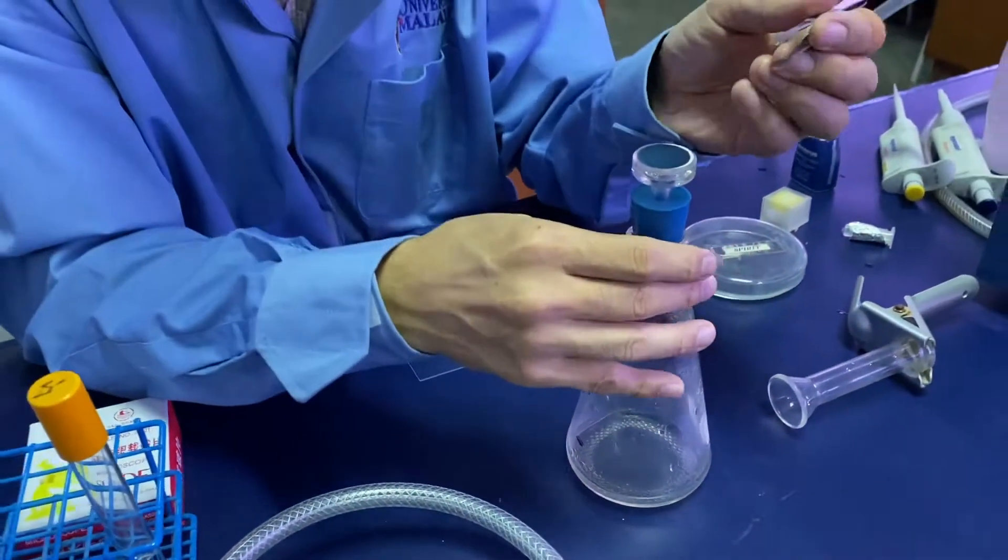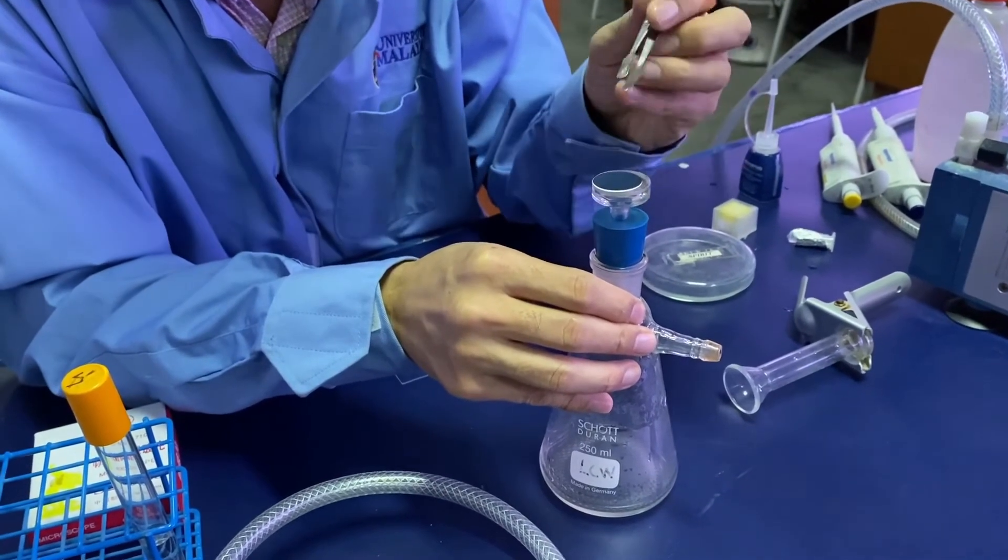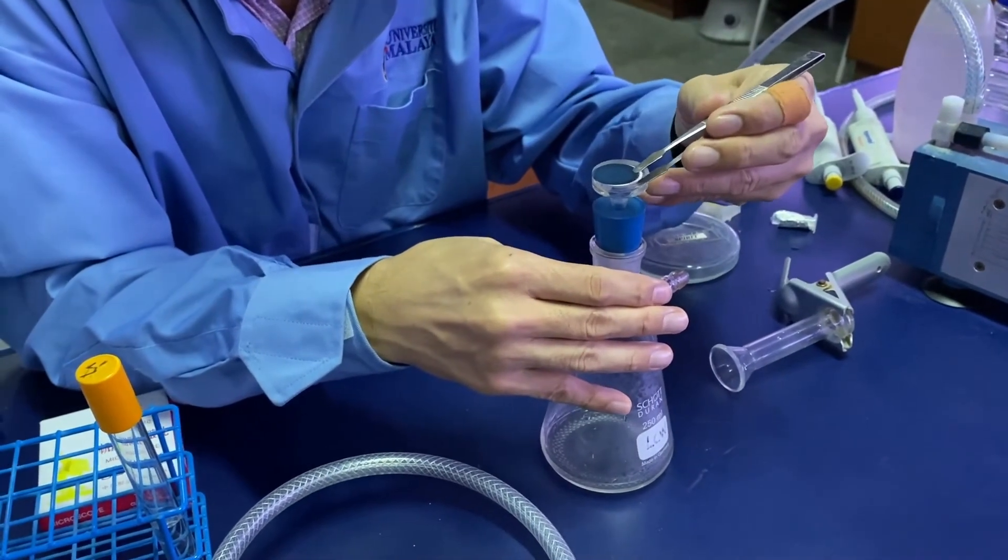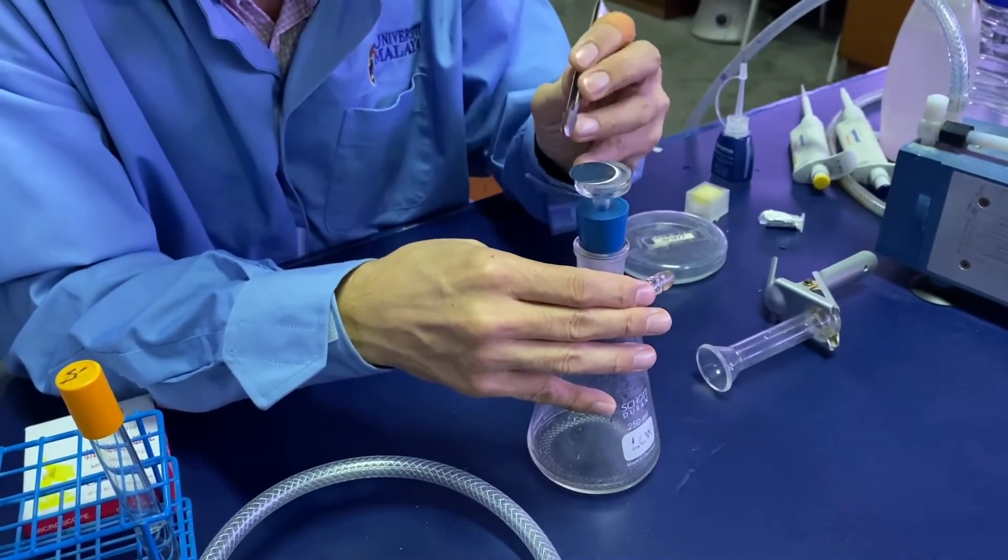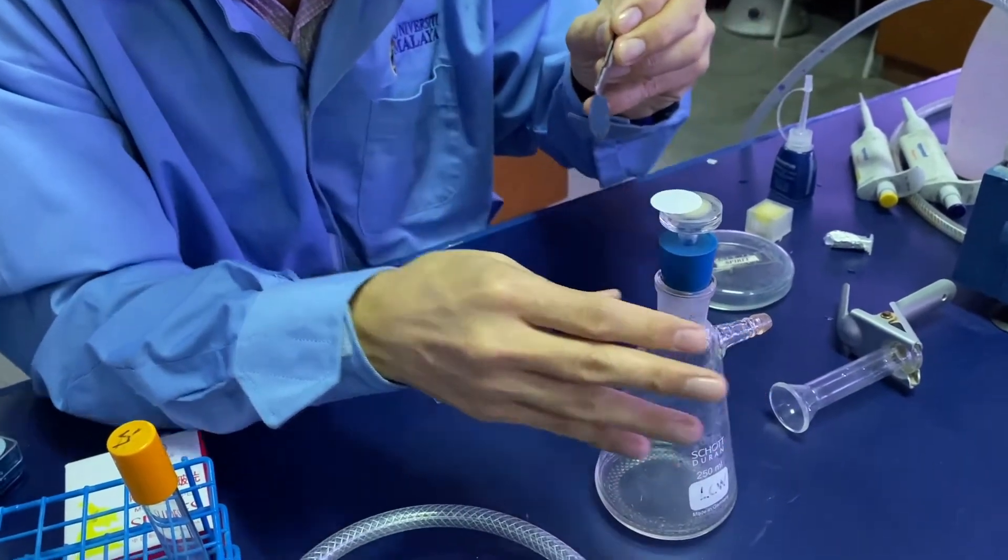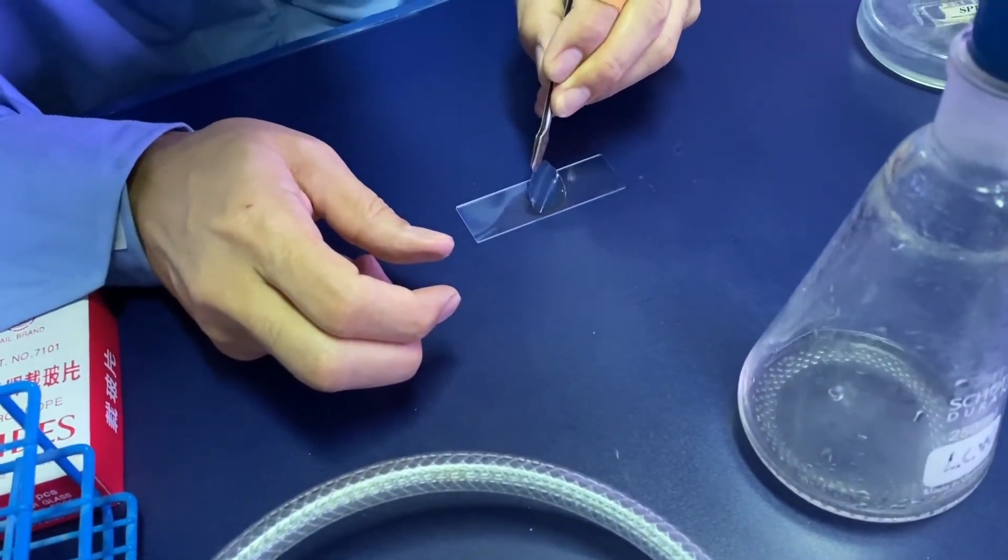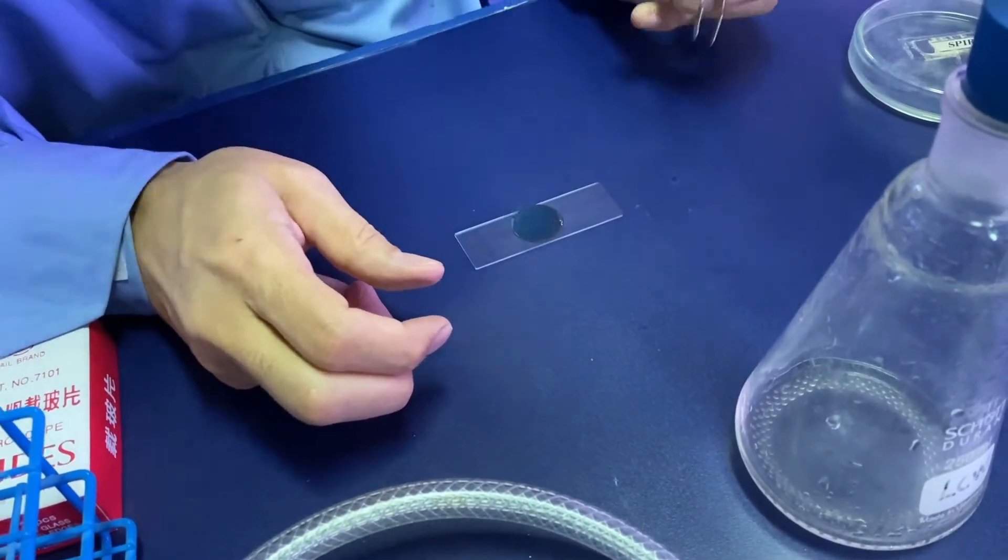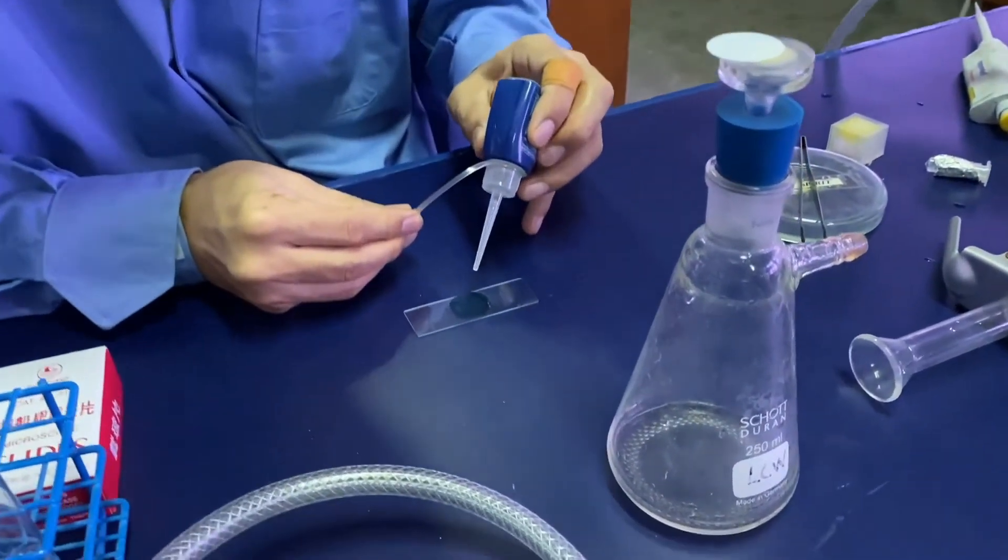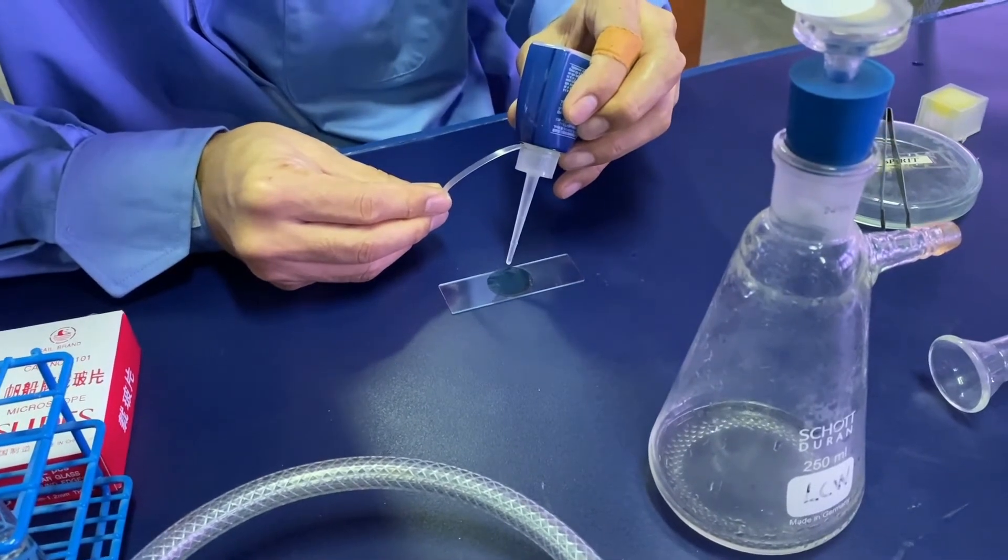Slowly remove the black polycarbonate filter from the filter base. Place it gently onto the oil. Next we'll put another drop of immersion oil onto the membrane filter.